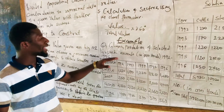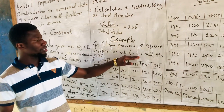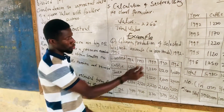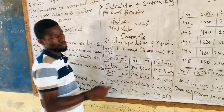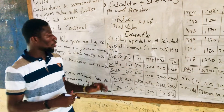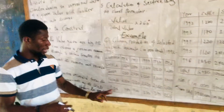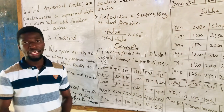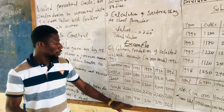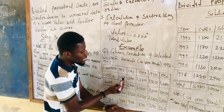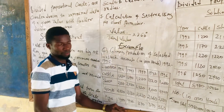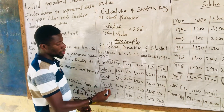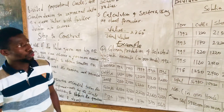Let's take an example. Ghana's production of selected livestock animals in hundreds, from 1992 to 1996. The livestock are cattle, sheep, goats, and pigs. We have the year from 1992 to 1996 and the values given for each year. When you pick cattle from 1992 to 1996, these are the values recorded. Similarly for sheep, goats, and each year.